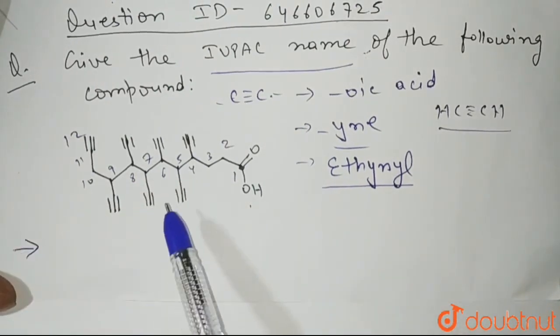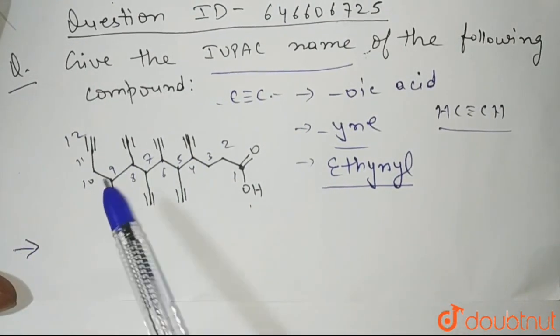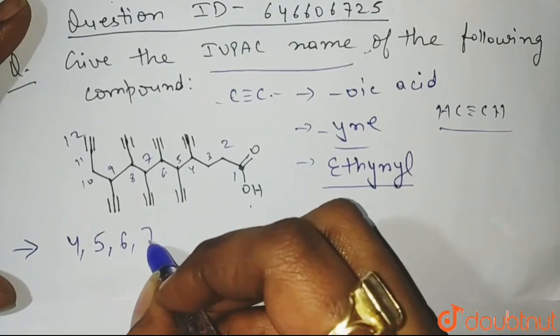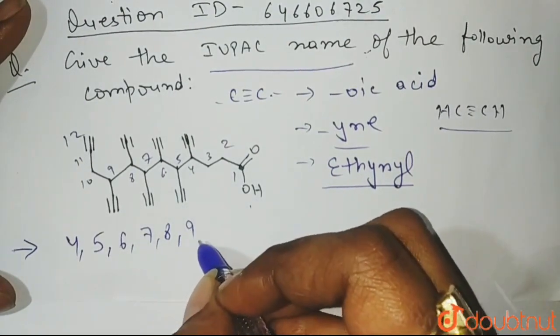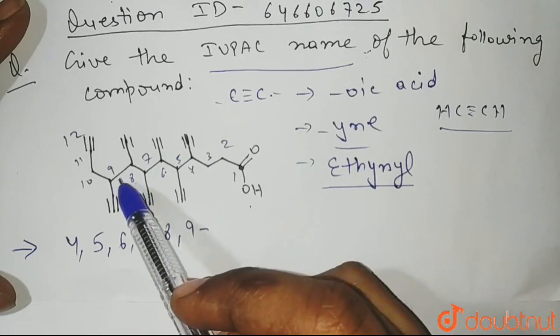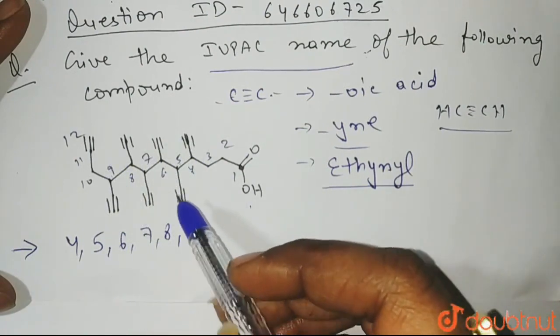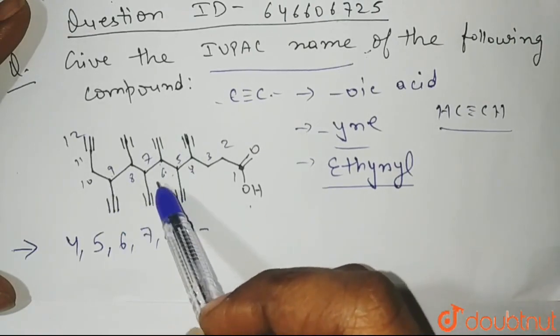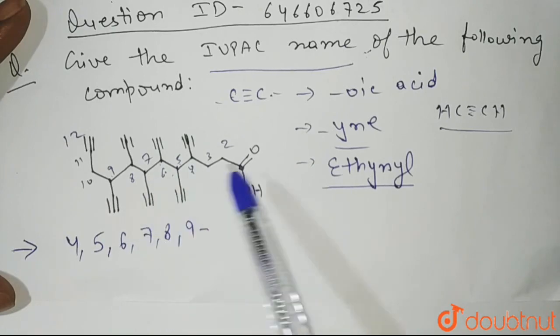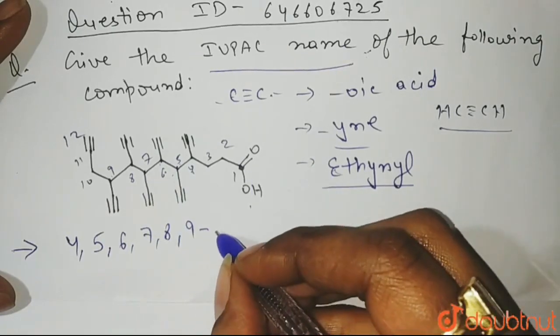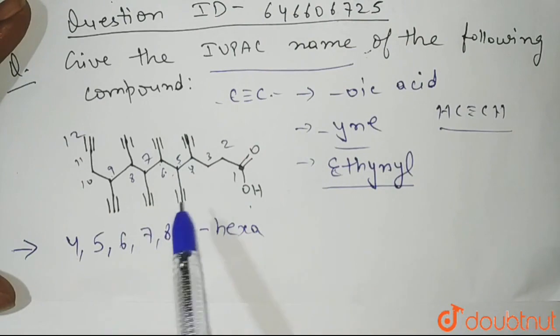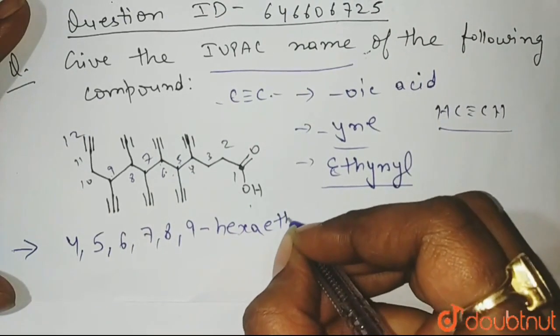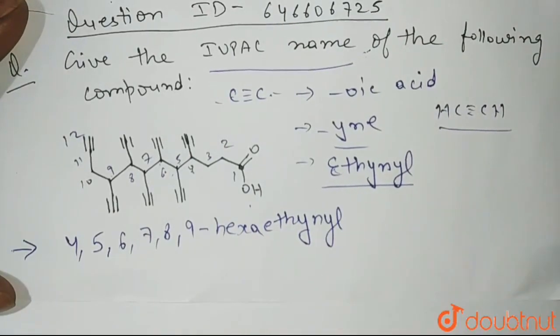So when you write the name of this compound, these all are substituents, right? So you will write first 4, 5, 6, 7, 8, and 9 because at all these carbons, ethynyl groups are present. And how many carbon atoms? I have written 1, 2, 3, 4, 5, and 6. All these 6 carbon atoms are having ethynyl group. So you will write hexa because at 6 carbon atoms, the ethynyl group is present. Hexa ethynyl.